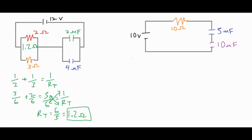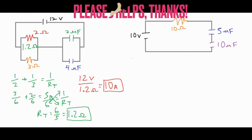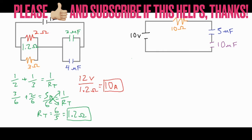With that, we have everything we need to use Ohm's law. We have the total voltage of 12 volts divided by the resistance of 1.2 ohms, which gives us a current of 10 amps. That would be our initial current at time equals zero as soon as the switch is closed — also called I₀, the initial current.